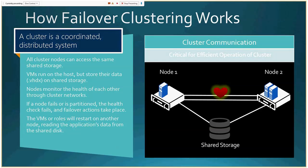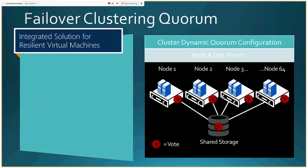If nodes miss a configurable number of heartbeat packets, the VMs will start up on another machine — that's failover. Failover in the past involved configuration challenges around quorum — a fancy word for majority — which is how the cluster knows whether it should fire up. For example, with four nodes in a cluster, if two nodes get separated from the other two, neither set is a majority, meaning the cluster is not functional and should not run to avoid problems.